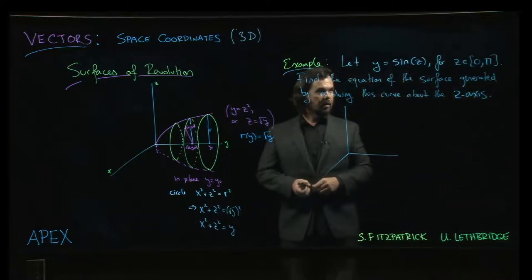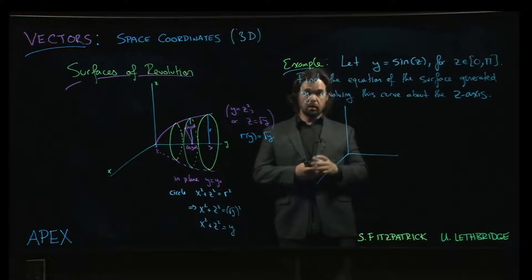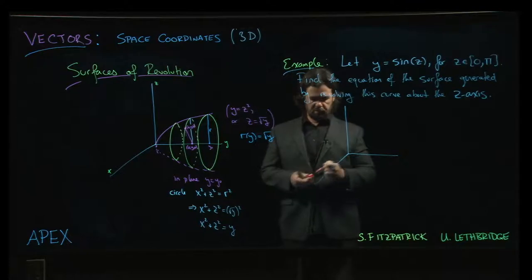All right, so let's look at an example. We've got y equals sine z, z going from 0 to pi. We'll see in a second why we have the domain restriction there.